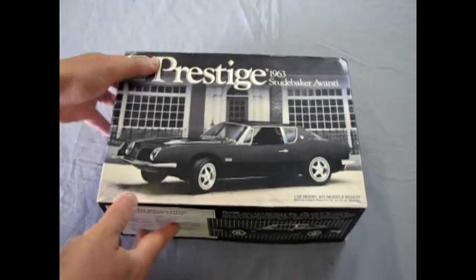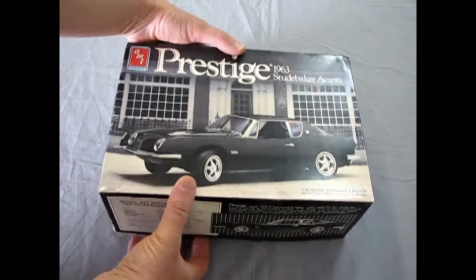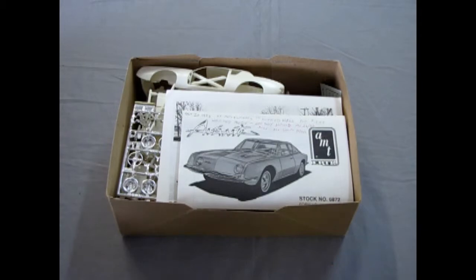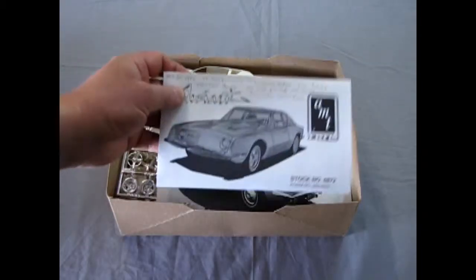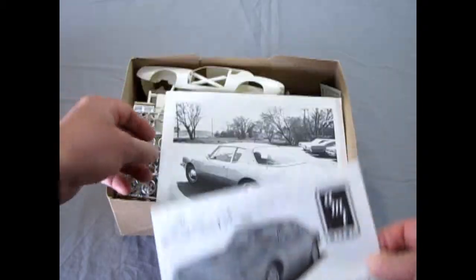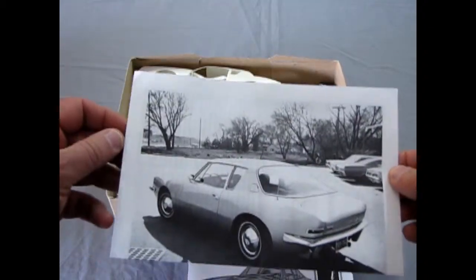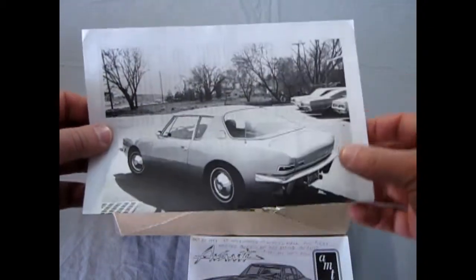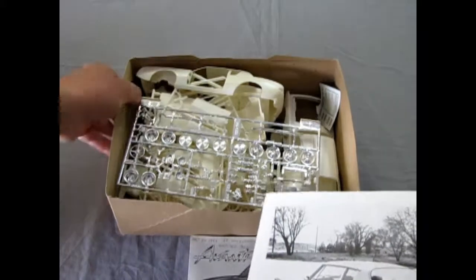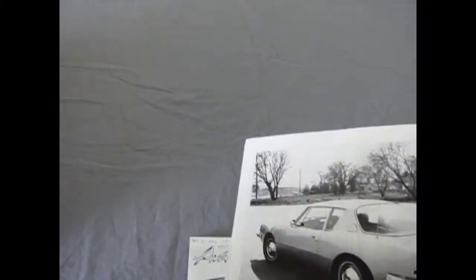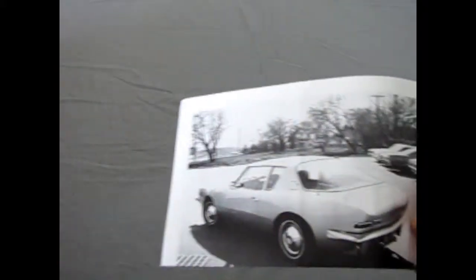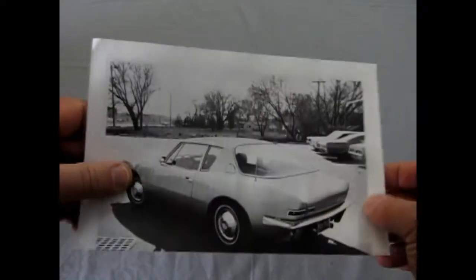All right. Now this side of the box of course looks like the top, so we won't worry about it. But what we will do is open up our prestige kit. And now note here that you get the instructions, and this is what makes it part of the prestigiousness. You get this. Now let's move the parts out of the way for a moment.